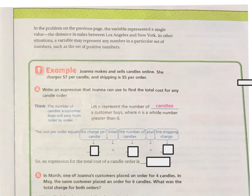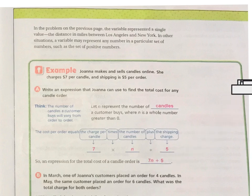So the cost per order is going to be the charge per candle. Remember, the charge per candle is $7. I'm going to move that away. Times the number of candles, which is the N, plus that shipping cost. Remember, that shipping cost was $5. So an expression for the total candle order is going to be 7N plus 5.